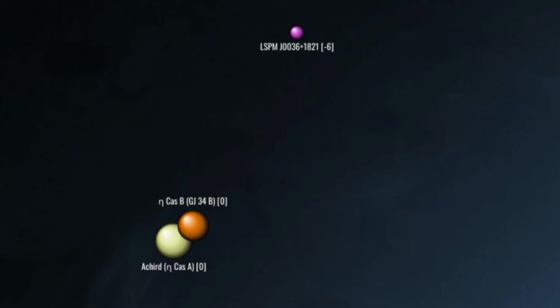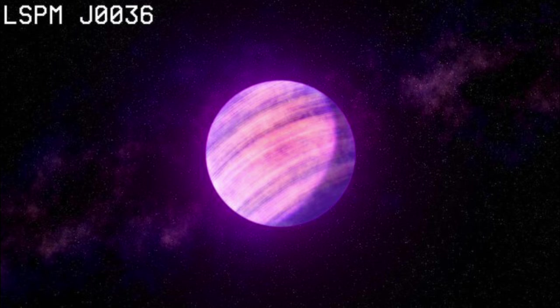West and 6 parsec south, we arrive at LSPM J0036, a hot brown dwarf with a fast rotation for just 3 hours, and thus a powerful magnetic field. Its spectrum includes a variable emission that may be due to the presence of an unseen companion. Polarization of light from its surface suggests a cloudy atmosphere.